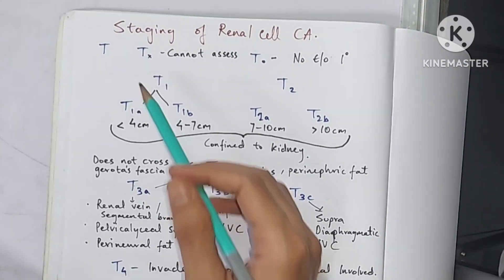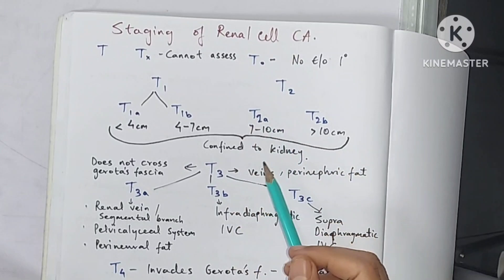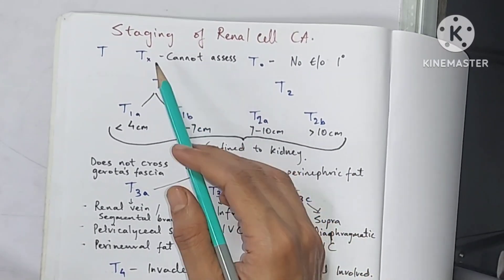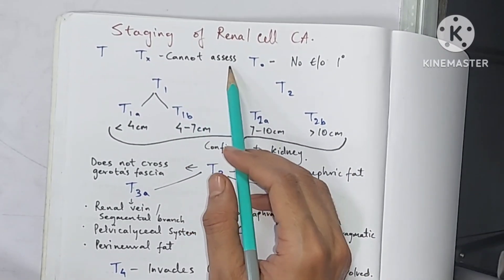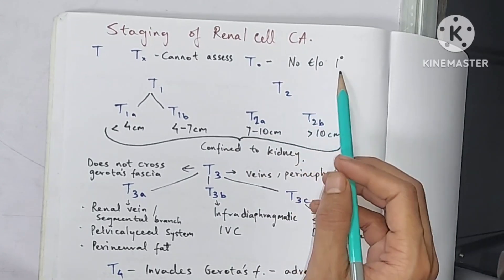Today we will be discussing TNM staging of renal cell carcinoma. Tx when the tumor cannot be assessed, T0 when there is no evidence of primary tumor.